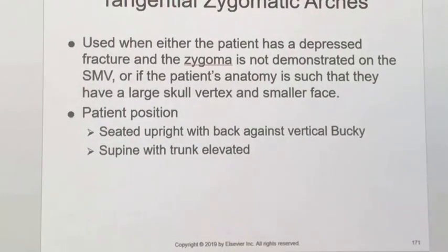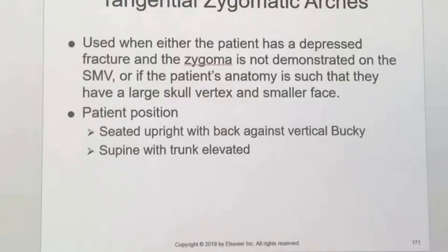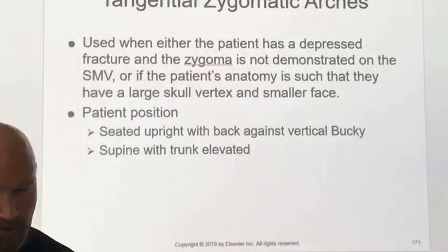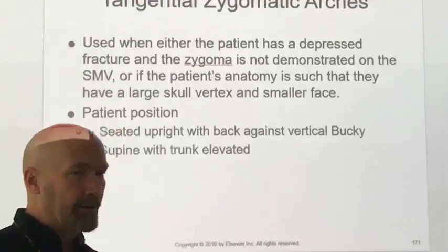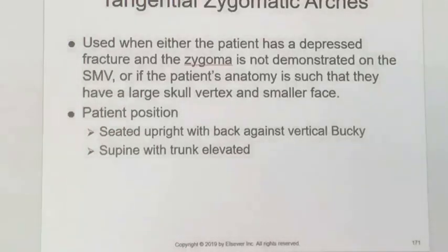For the tangential projection of the zygomatic arches, the wording in the textbook gets a little confusing, so I wanted to start a new video and go through that. On page 77 it says tangential projection — we use the tangential whenever the SMV just doesn't show us what we need to see. In a lot of cases, even if the patient's anatomy is normal or they don't have a big head, if they've got a depressed fracture you just can't see the fracture well.